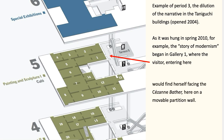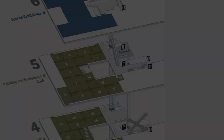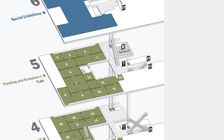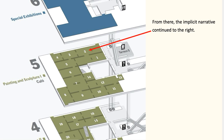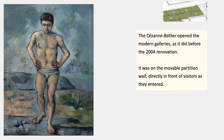When you entered that door, you would be facing a little small partition wall, and on the partition wall you would see the Cézanne Bather. It was a movable partition wall with space on either side, so it would be directly facing you, blocking the further galleries until you would pass it. From there, the implicit narrative continued to the right into gallery two. The Cézanne Bather opened the modern galleries as it did before the 2004 renovation, and was the gateway, portal, talisman, or icon of the entire collection of the Museum of Modern Art.